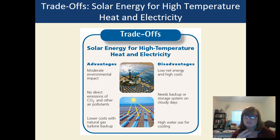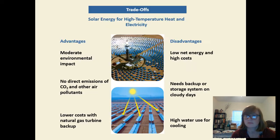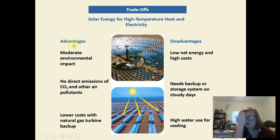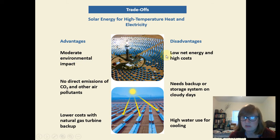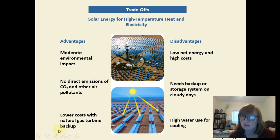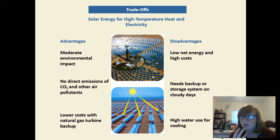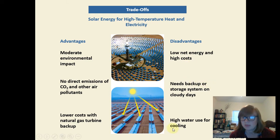Looking at trade-offs for using solar to make high-temperature heat and electricity: there's moderate environmental impact because you're in a desert and must dig up materials to produce the systems. It doesn't directly emit CO2 or other pollutants. Cost is lower if you use a natural gas turbine as backup. Disadvantages: by the time you build everything and account for cooling energy, you put a lot of energy in and don't get a lot out. It still costs a lot, you need a backup system, and you use a lot of water to cool the equipment.